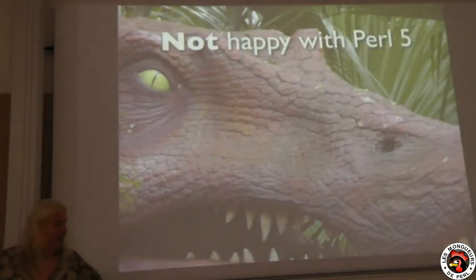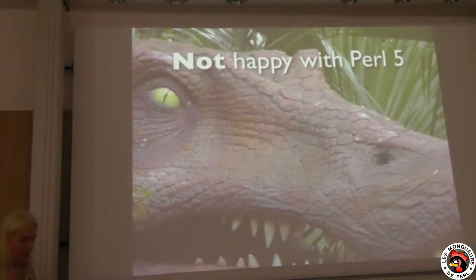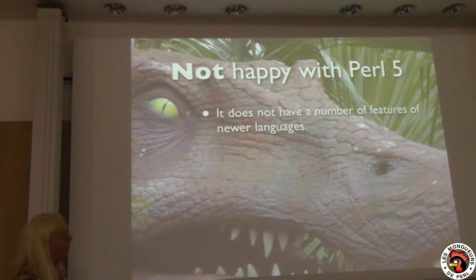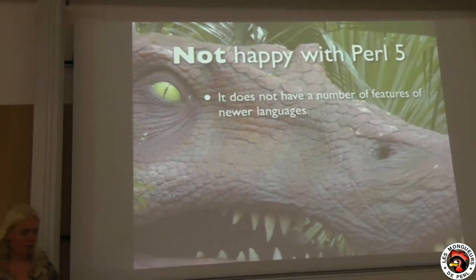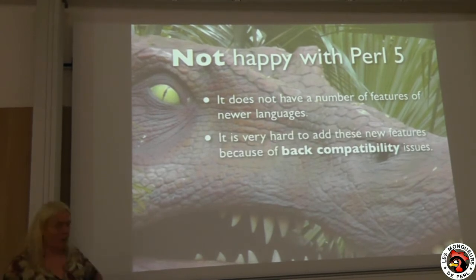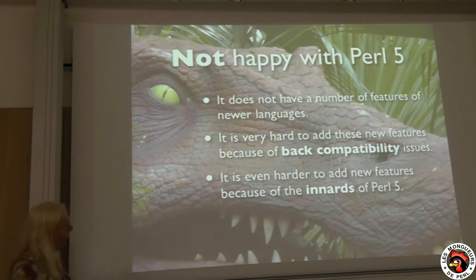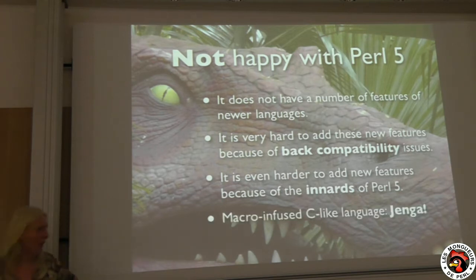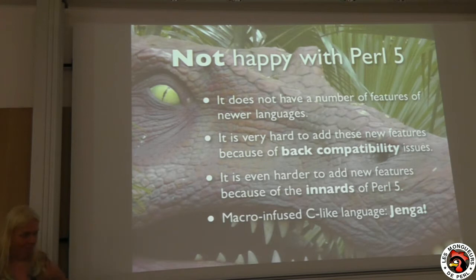If we look at Perl 5, many people are not happy with it, because it doesn't have a lot of features that we have in other languages. It looks even harder to add features to it inside, and that's because internally — people say it's C, but it's actually a language called Xen.